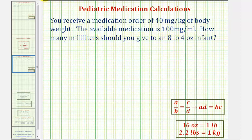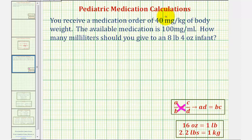To solve this problem, we'll be using proportions, which we see here below, where if the units of A and C are the same, and the units of B and D are the same, then A times D must equal B times C. To set up the first proportion, we'll use the rate 40 milligrams per kilogram of body weight.